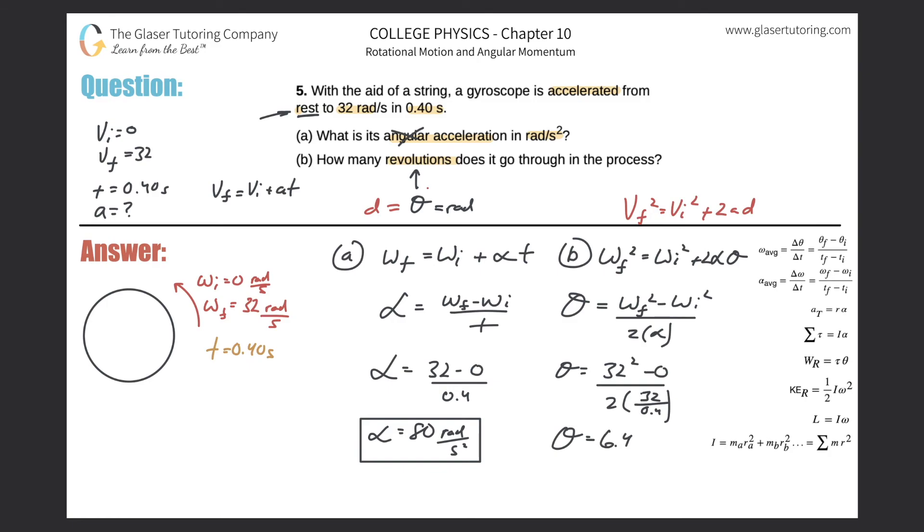6.4 radians—that's almost the answer. Remember, we need revolutions, so all we have to do is convert radians into revolutions. We just take the 6.4 radians and multiply it by one revolution over 2π radians, because there are 2π radians for every one revolution.